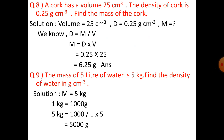So m equals d into v, which equals 6.25 grams. Question 9: the mass of 5 liters of water is 5 kg. Find the density of water in grams per cubic centimeter. Mass is given as 5 kg, so we need to convert it into grams.